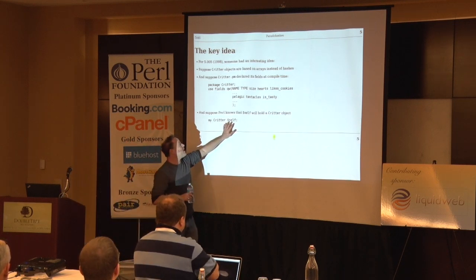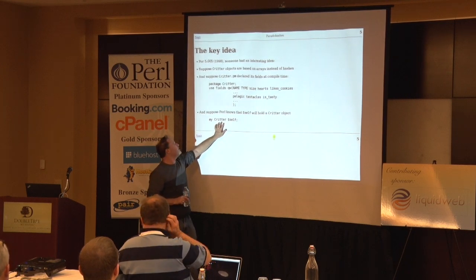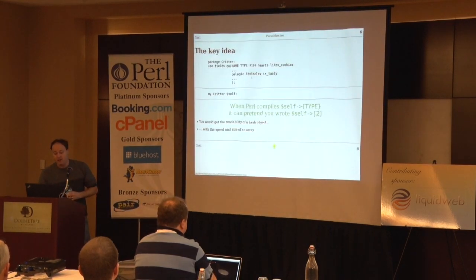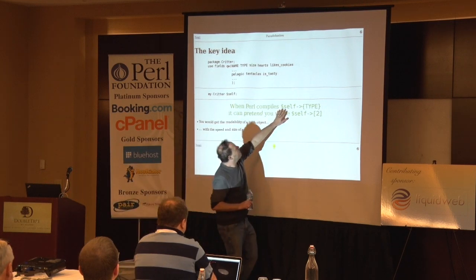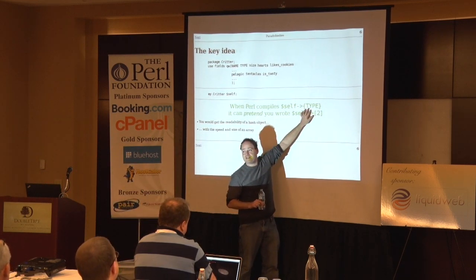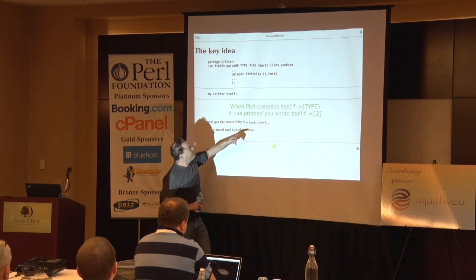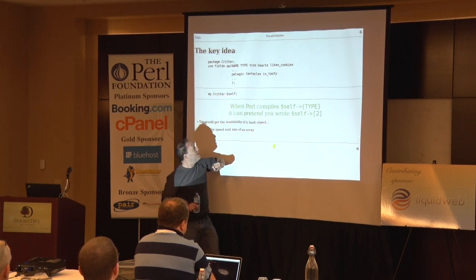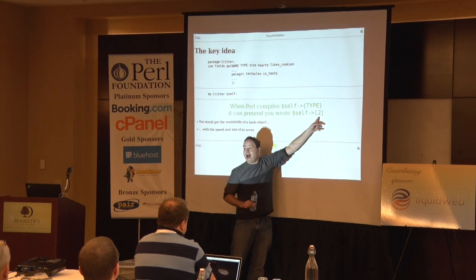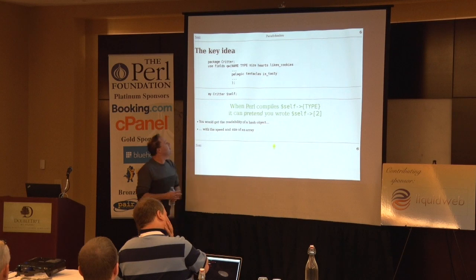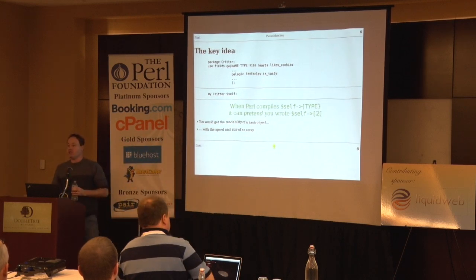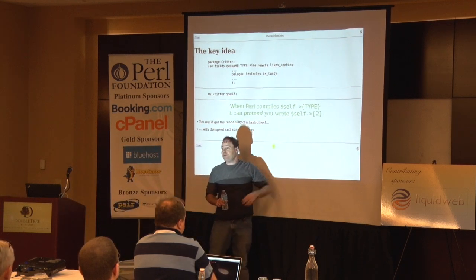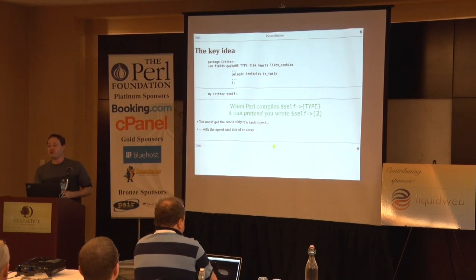If you promise Perl that this variable is always going to contain a Critter object, then when Perl compiles your code, you could write self-arrow-hearts, and Perl would say, 'I know that self contains a Critter object, and Critter objects have this list of fields, so hearts is field number two' — and it can compile it as if you wrote a direct array index. So you'd get the readability of hash objects, but self would actually contain an array, and you'd be doing a faster array lookup.